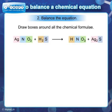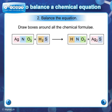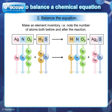Step 2: Balance the equation. Draw boxes around all the chemical formulae. You are drawing boxes so that you will be sure not to mess around with the formulae to balance the equation. Make an element inventory — that is, note the number of atoms both before and after the reaction.